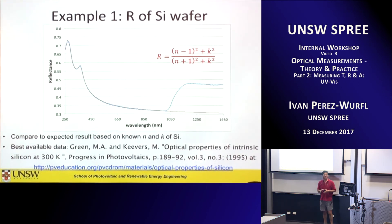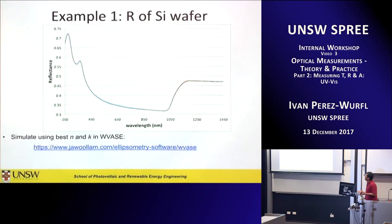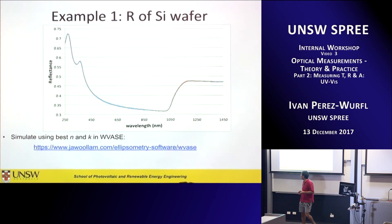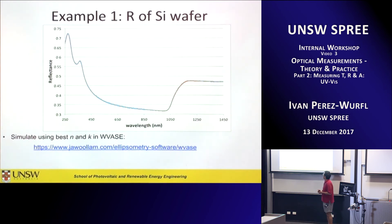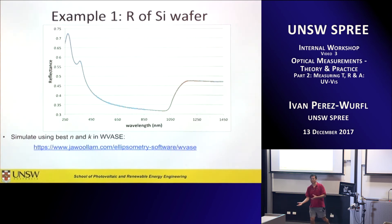What I did was take that data and put it into WBase simulation software. When I simulated the reflectance without considering the back surface reflection, it matched the expected flat ~30% level. Once I accounted for reflection from the back, it almost fit perfectly. I still didn't know the wafer thickness, so I measured it — it turned out to be exactly 500 microns — and generated the simulation data. The fit was amazing. This was a great sanity check, and it shows how WBase can help you understand what's going on in your measurement.